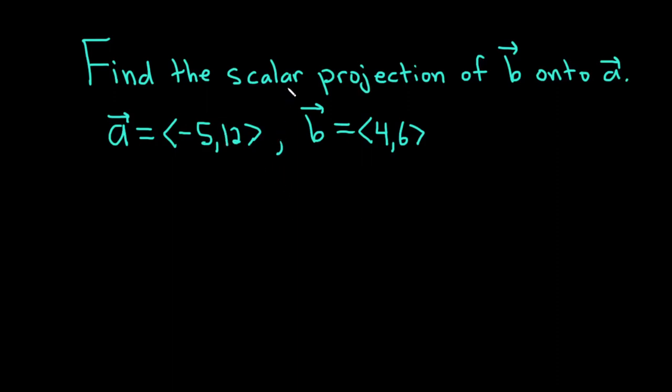In this video, we're going to find the scalar projection of B onto A. This is also called the component of B along A. Our vectors are A, whose components are negative 5 and 12, and B, whose components are 4 and 6.